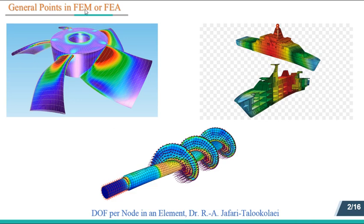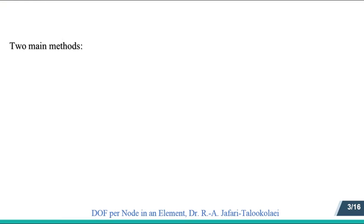The finite element method, abbreviated as FEM, or sometimes finite element analysis, abbreviated as FEA, is a numerical method to obtain the solution of some problems in physics and engineering. This method discretizes a whole body into an equivalent system of smaller bodies or units called finite elements, which are interconnected at common points, boundary lines, or boundary surfaces. These common points are called nodal points or nodes. In FEM, instead of solving the problem for the entire body, we formulate equations for each finite element and assemble them to obtain the solution of the whole body.